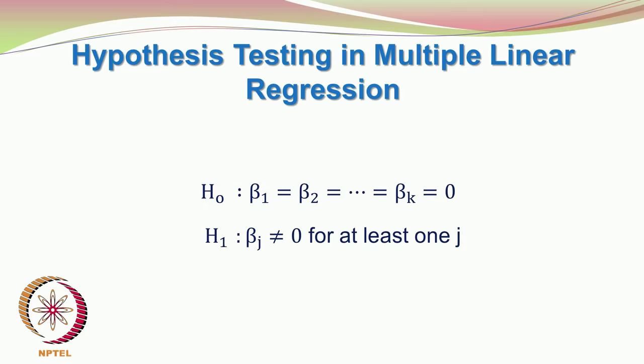When βj becomes 0, then βj·xj will be 0, meaning whatever value xj takes, the effect of that variable on the experiment is insignificant. The null hypothesis says all regression coefficients are 0 — none of the variables are really affecting the process. This is the most skeptical point of view. The alternate hypothesis says βj ≠ 0 for at least one j, meaning at least one variable actually affects the process response.